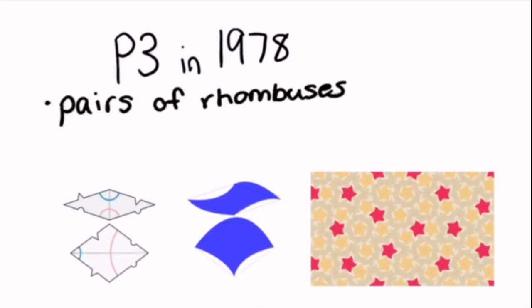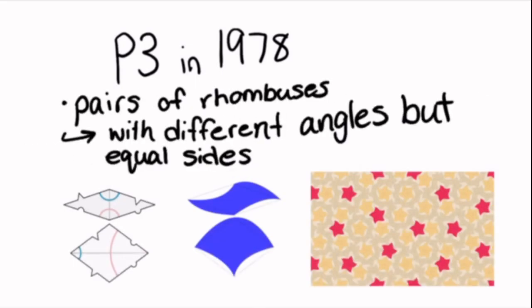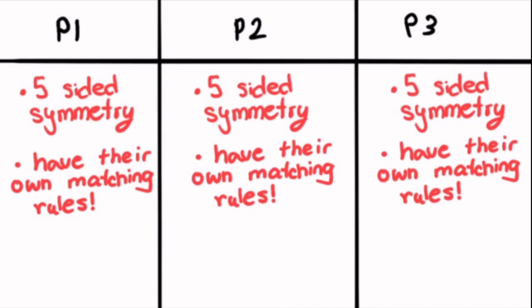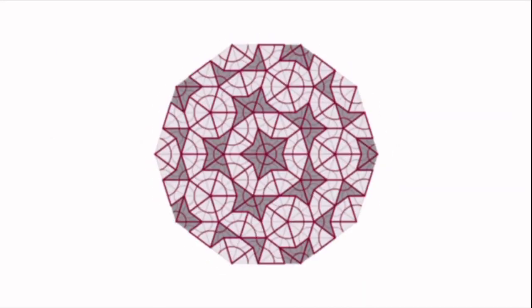and P3 in 1978, where pairs of rhombuses with different angles but equal sides were used. All three versions of Penrose tiling have five-sided symmetry and have their own matching rules for how to put certain tiles together. They can be generated in many ways and can be made to tile infinitely.